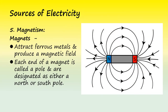Magnets are our fifth source of electrical generation. Since it is such an important part of electrical production, we will spend a little more time discussing them. Magnets attract ferrous metals, what we commonly think of as iron, and includes most forms of steel. They each have a north and south pole, much like the planet Earth, which acts like a large magnet with lines of magnetic flux moving from the north to the south pole.